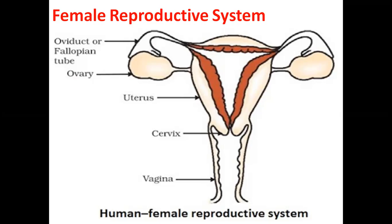The fertilized egg, that is called the zygote, gets implanted in the lining of the uterus and starts dividing. The mother's body is designed to undertake the development of the child. The uterus prepares itself every month to receive and nurture the growing embryo. But in case fertilization does not take place, then this unfertilized egg along with the blood in the lining is ruptured and comes out of the vagina. That is what we call the menstruation cycle in the female.